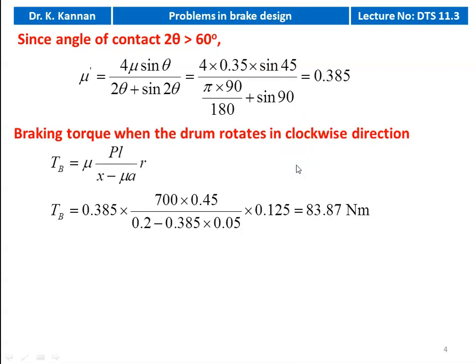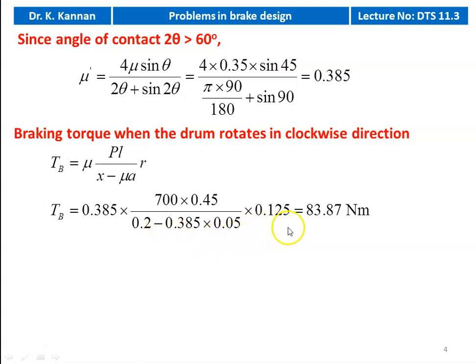The braking torque when the drum rotates in the clockwise direction: Tb = μ' × P × L / (X − μ' × A) × R. Substituting numerical values: 0.385 × 700 × 0.45 / (0.2 − 0.385 × 0.05) × 0.125 = 83.87 Newton meter.